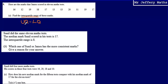So what do we mean by the upper quartile and the lower quartile? The lower quartile is simply the number which is one quarter of the way along a list of numbers. And the upper quartile is the number which is three quarters of the way along a list of numbers.